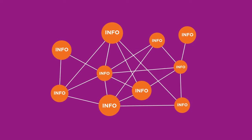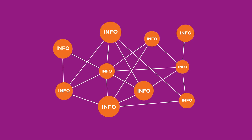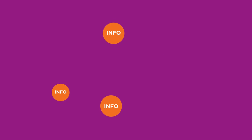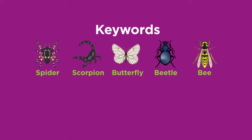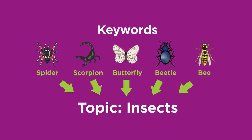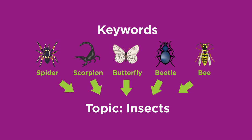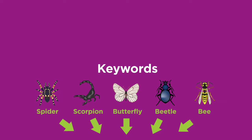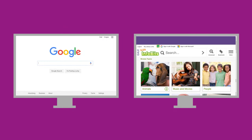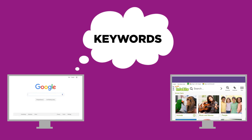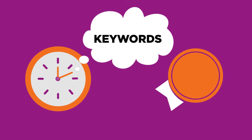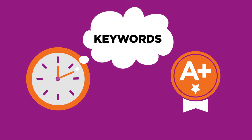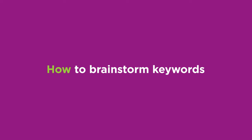There's a lot of information out there — the trick is finding the good stuff. Keywords are important words related to your topic that help you find good information, whether you're searching the internet or a library database. Thinking about keywords before you search can save time and help you get better results. This video will show you how to brainstorm keywords for your searches.